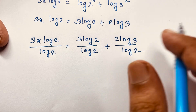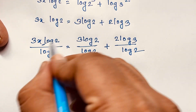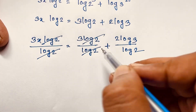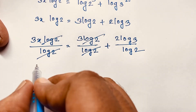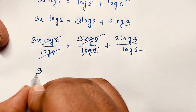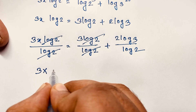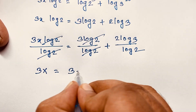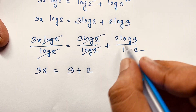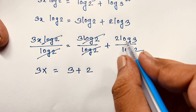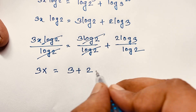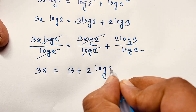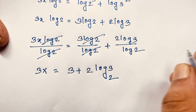Dividing both sides by log 2, the log 2 terms cancel out. We find 3x equals 3 plus 2·(log 3 / log 2), which is 3 plus 2·log base 2 of 3. Therefore x equals (3 + 2·log₂3) / 3.